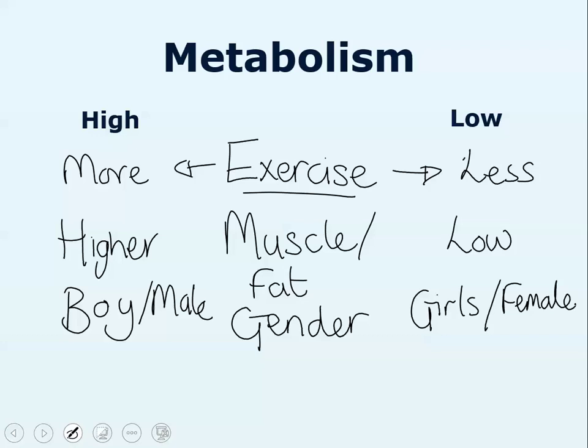There's one last thing that affects metabolism — and something we can't do anything about — and that's your genetics. Your genetics will determine whether you have a high or low metabolism, and you can't change that. If your genetics give you a high metabolism, that's great. If they give you a low metabolism, you need to watch what you're eating a bit more.